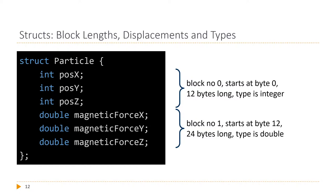In the code example, we have a struct particle with three integers for position x, y, z and three double values for a force vector from a particle-in-cell physics simulation. We have two blocks: block zero starts at byte zero, is 12 bytes long (three integers of four bytes), and the type is integer. Block one starts at byte 12, is 24 bytes long (three doubles), and the type is double.